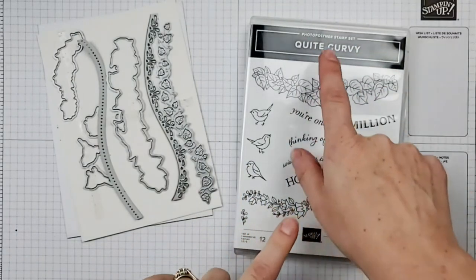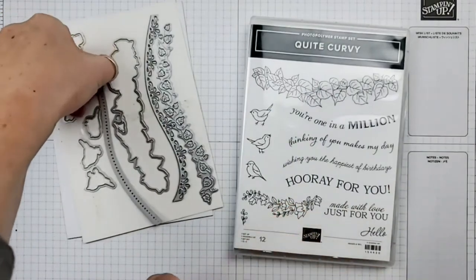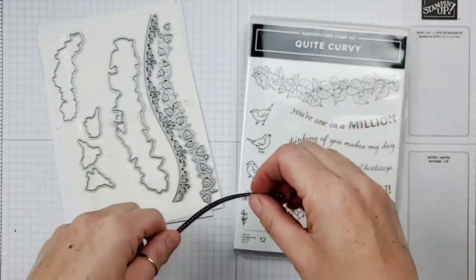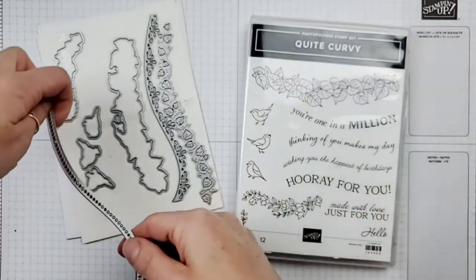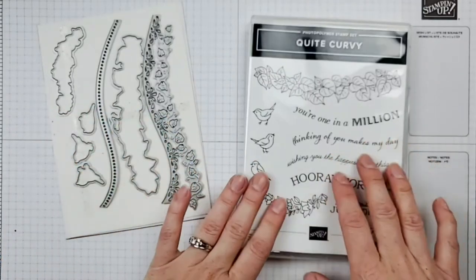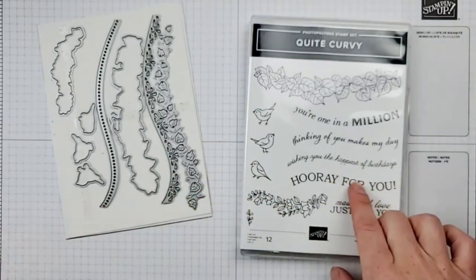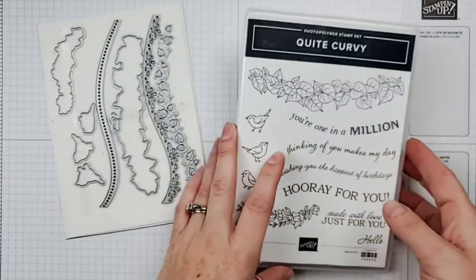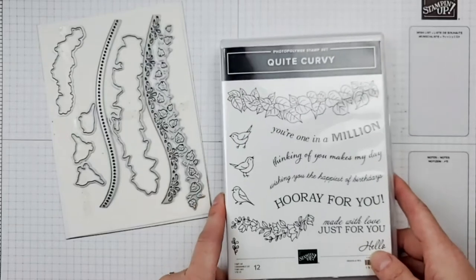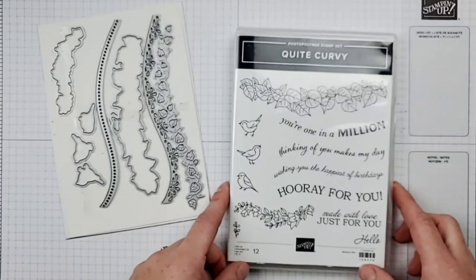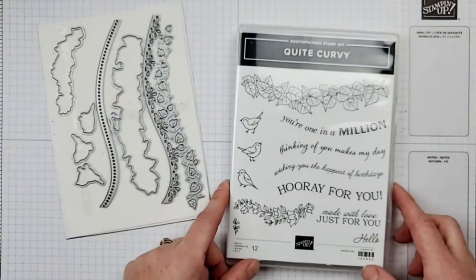So the Quite Curvy stamp set and the Quite Curvy dies, which of course coordinate. I believe both of these are retiring soon, which is kind of sad, but it makes me want to jump in and try to get some use out of them before they're gone forever. I really enjoyed making a card with this set and I had to borrow it because I don't actually own it.